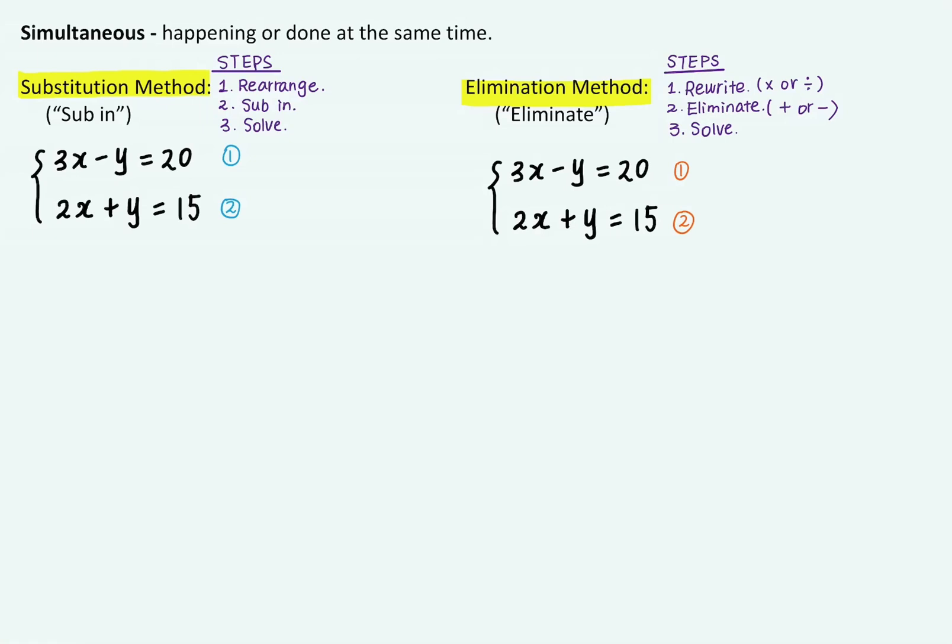If I label my equations as equation one and equation two, I can rewrite the second equation as y in terms of x. So in other words, I can represent y using x. So if I take away 2x on both sides, equation two becomes y is equal to 15 minus 2x.